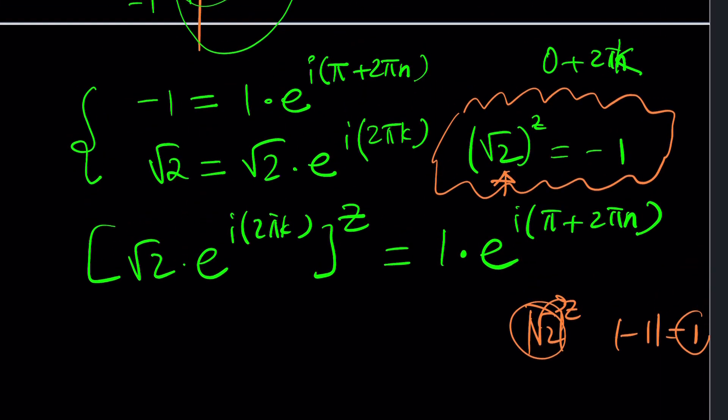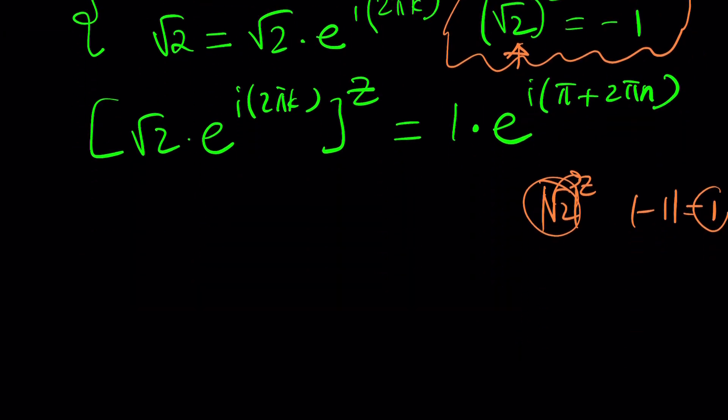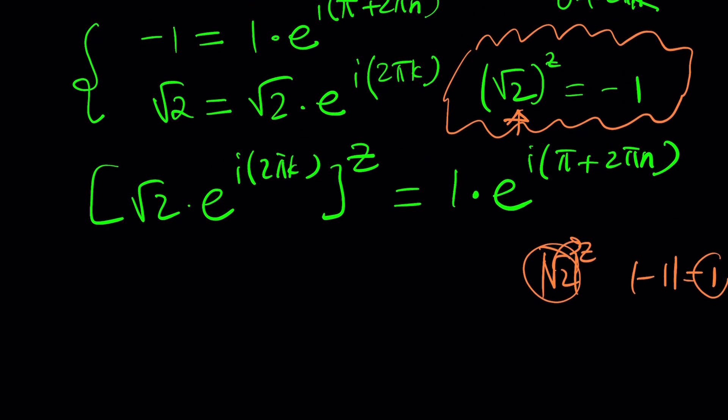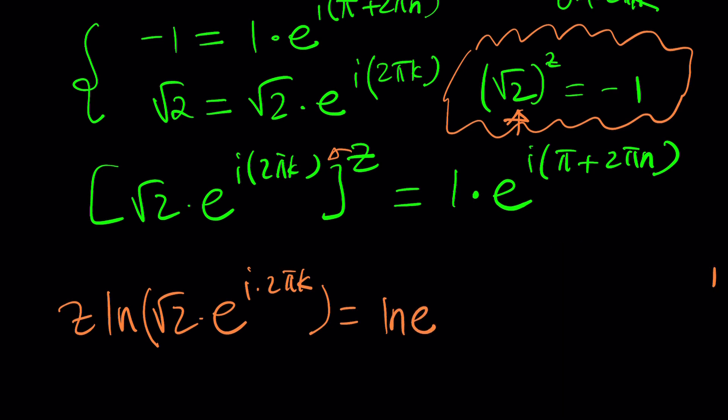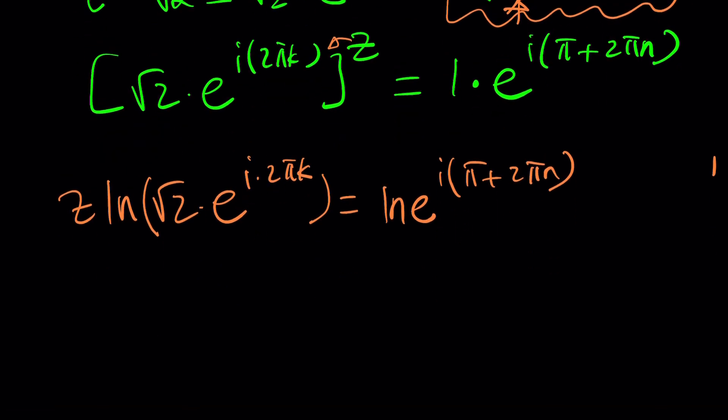Let's go ahead and work this out. What should we do next? The best way to approach it is instead of distributing the z inside, why don't we just natural log both sides. That's going to give us z times ln root 2 times e to the power i times 2 pi k equals ln e to the power i times pi plus 2 pi n.